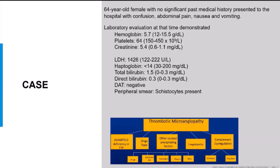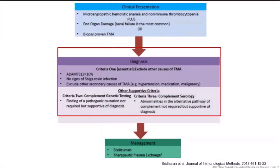The case is a 64-year-old female with no significant past medical history presenting with confusion, abdominal pain, nausea, and vomiting. Labs showed anemia (hemoglobin 5.7), thrombocytopenia (platelets 64,000), and end organ damage (creatinine 5.4). The anemia was hemolytic with elevated LDH, decreased haptoglobin, elevated indirect bilirubin, negative Coombs test (DAT negative), and schistocytes on peripheral smear — all consistent with TMA.